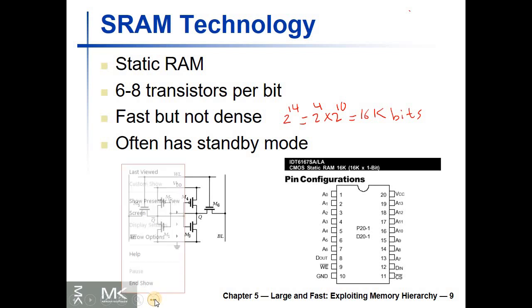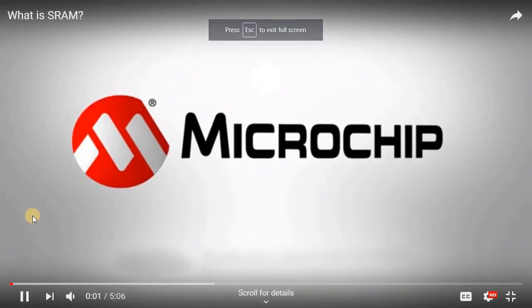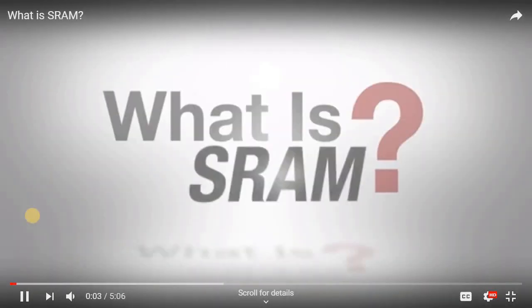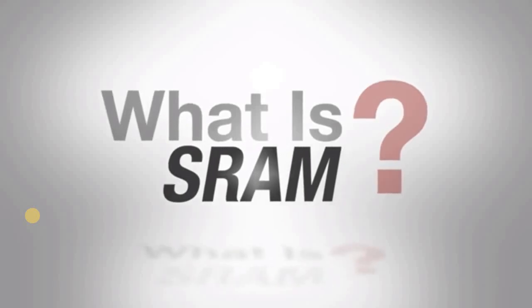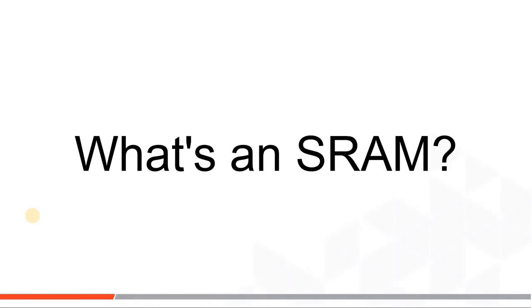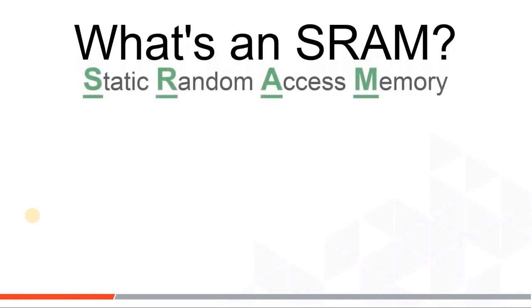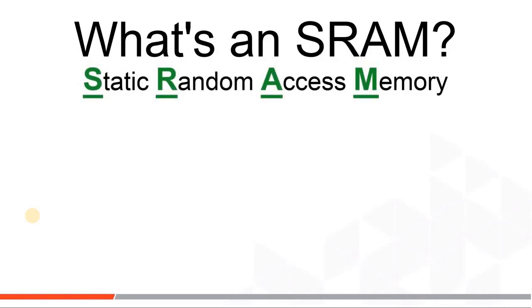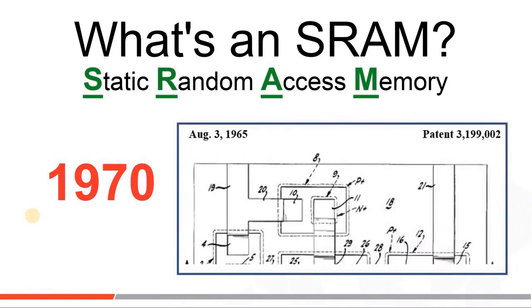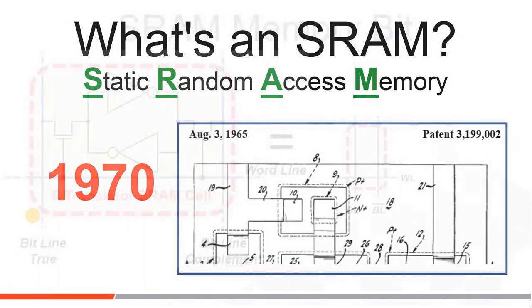Hello and welcome to Microchip's memory technology series. So what is an SRAM? SRAM stands for static random access memory. The first SRAM integrated circuit was sold around 1970, about 50 years ago. That means they were introduced within a decade of the very first planar transistors and integrated circuits.